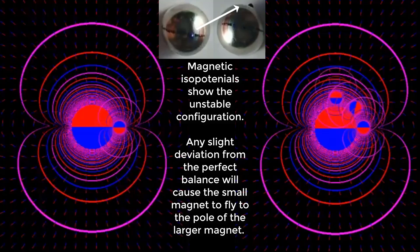Magnetic isopotentials show the unstable configuration. Any slight deviation from the perfect balance will cause the small magnet to fly to the pole of the larger magnet.